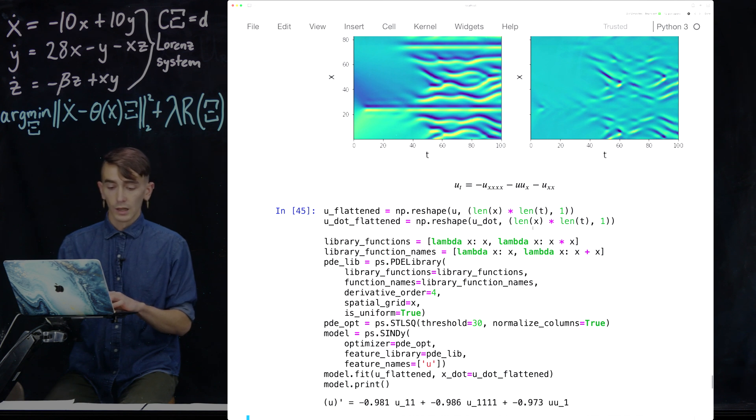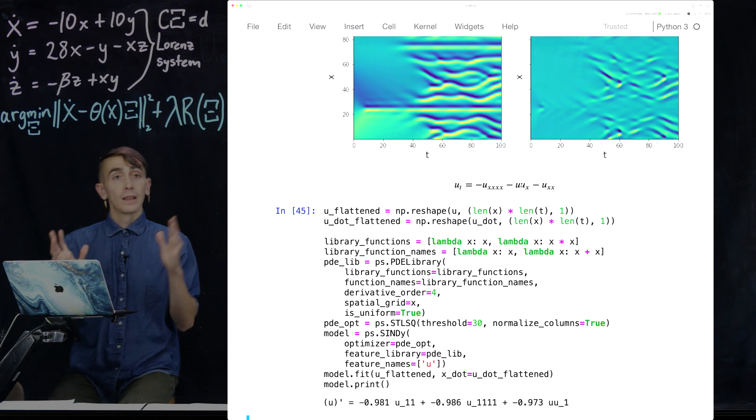And basically, we've reproduced the model that we found. So this is u dot is minus u_xx, minus u_xxxx, and same thing, u*u_x. So if we just take the PDE data, we flatten it, we build this library with this spatial grid, and then we choose how many derivatives in space we want, we can correctly identify PDEs in space.